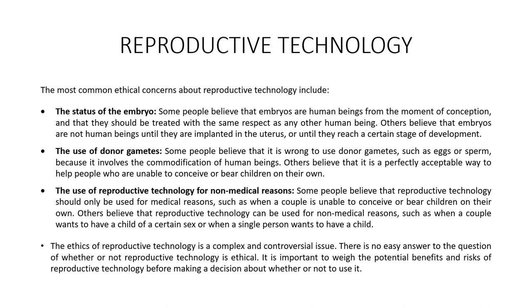The use of donor gametes is another concern — some people believe it is wrong to use donor gametes such as eggs or sperm because it involves the commodification of human beings, while others believe it is a perfectly acceptable way to help those unable to conceive or bear a child on their own. Some believe reproductive technology should only be used for medical reasons, while others believe it can be used for non-medical reasons such as when a couple wants a child of a certain sex or when a single person wants to have a child. It is important to weigh the potential benefits and risks of reproductive technology before making a decision about whether or not to use it.